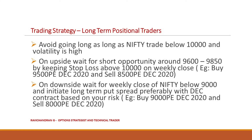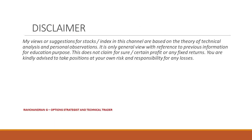Now let's discuss a trading strategy for long-term positional traders. Since Nifty has started forming a downward channel, it's better to avoid going long as long as Nifty trades below 10,000 and volatility is very high. On the upside, wait for a short opportunity around 9600 to 9850 with stop loss above 10,000 on weekly close. On the downside, wait for a weekly close of Nifty below 9000 and initiate a long-term put spread — preferably a December contract. For example, buy the 9000 put option December and sell the 8000 put option December.